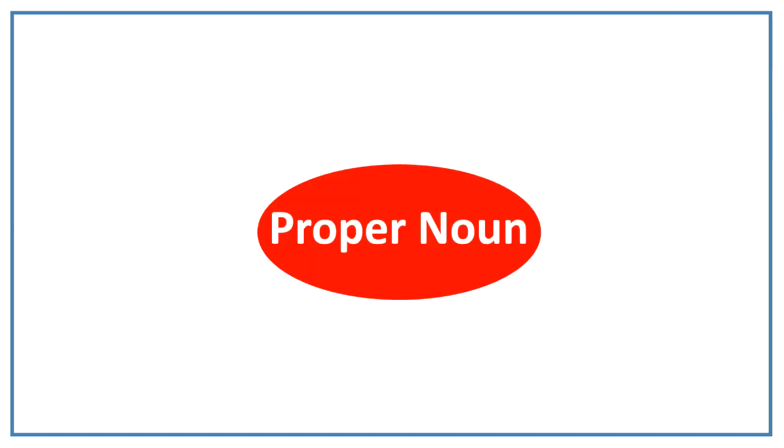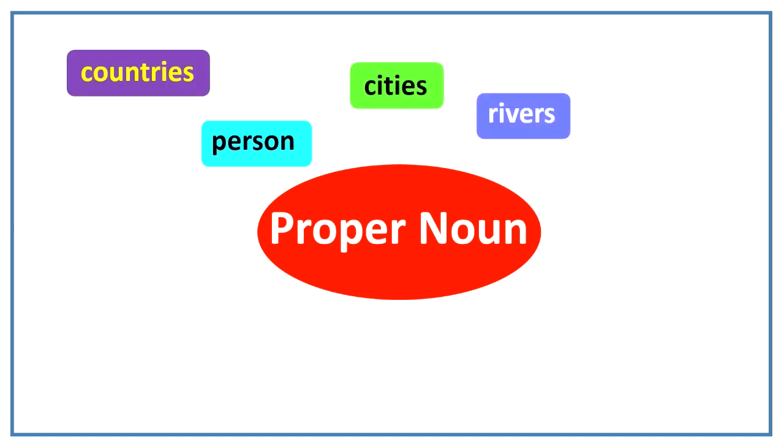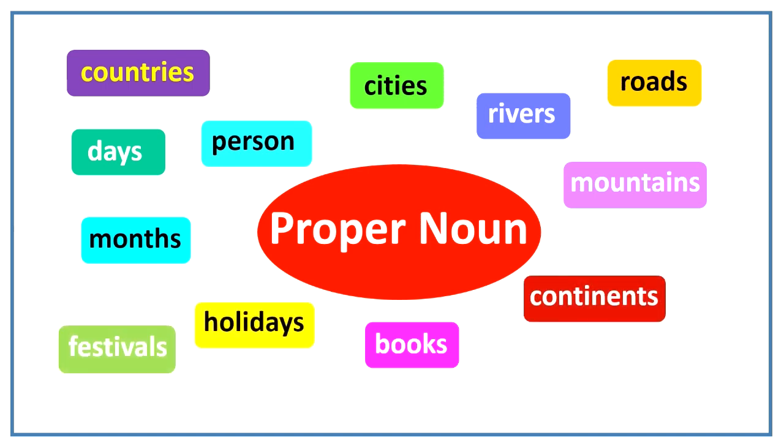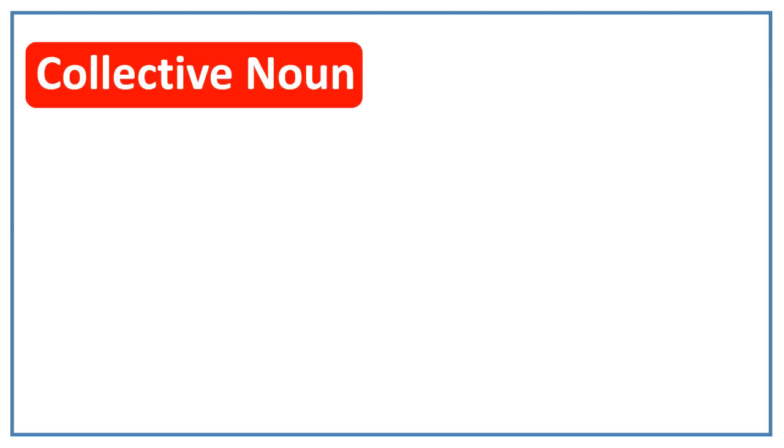Now we know that proper noun is a specific name of person, cities, rivers, countries, days, months, roads, mountains, books, holidays, festivals, continents and monuments.